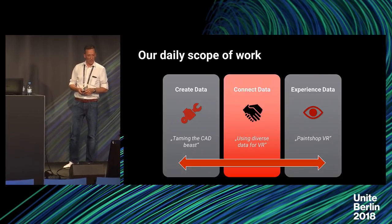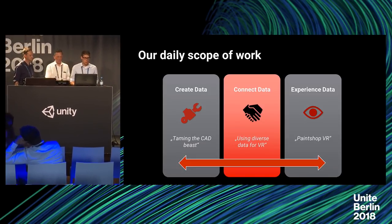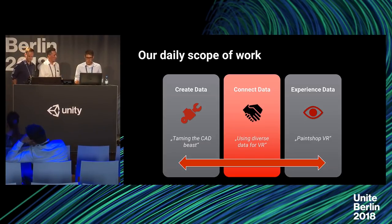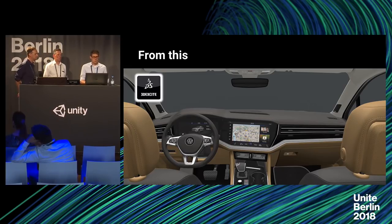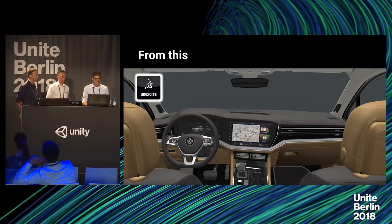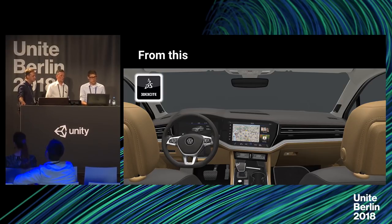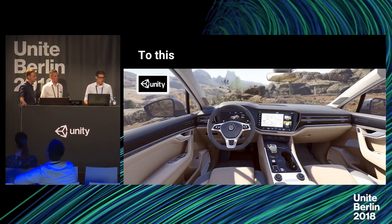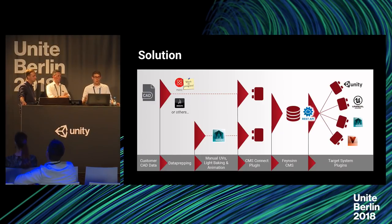I will tell you about how we connect our data and how we get from CAD to, for example, a Unity project. We start in DataGem — the data is imported from CAD and all material mapping, UV mapping, geometry switches, and similar tasks are done there as part of data prep. Then we have to get this model to Unity. Here is the whole pipeline: it starts from the left with our CAD data from the customer and ends at our target system like Unity.